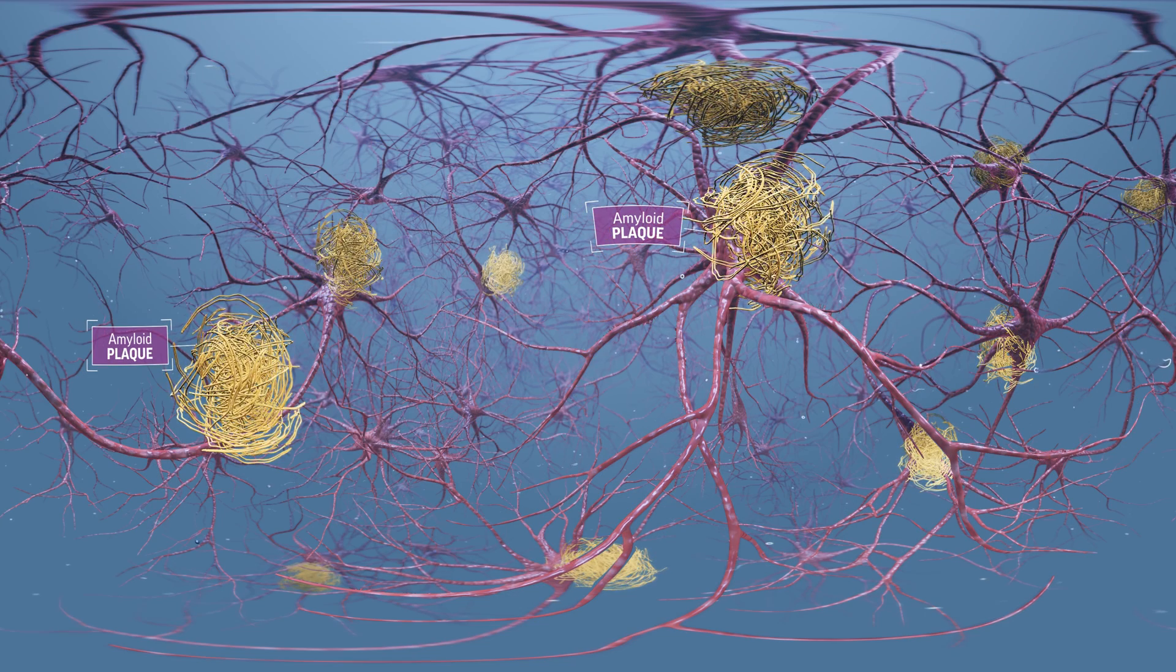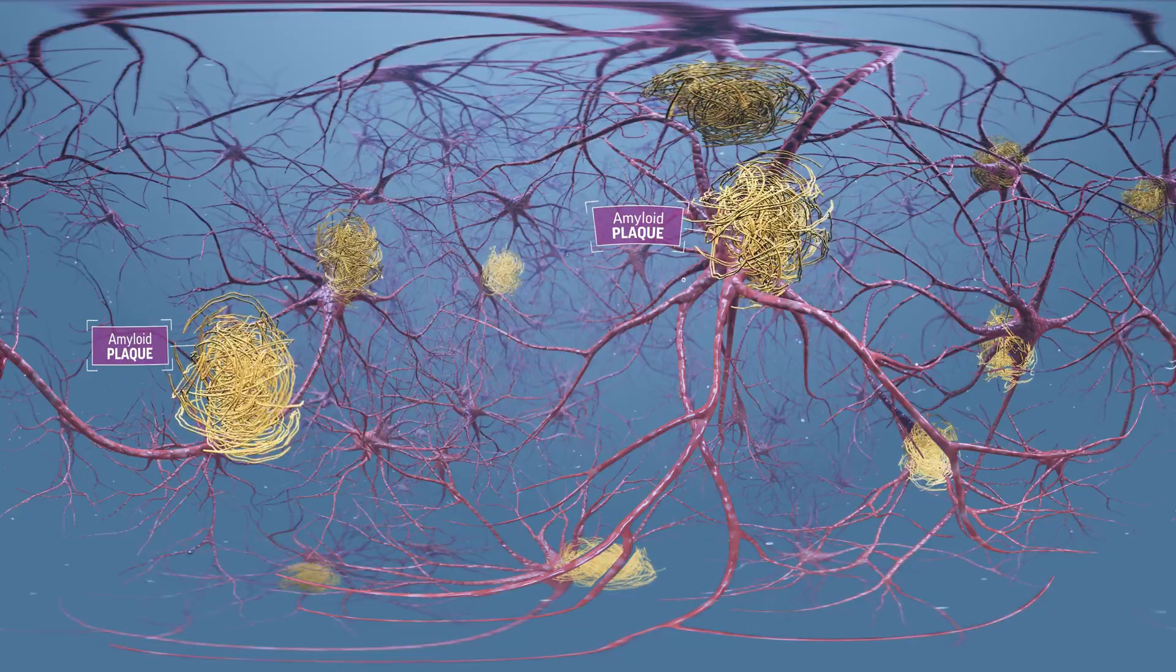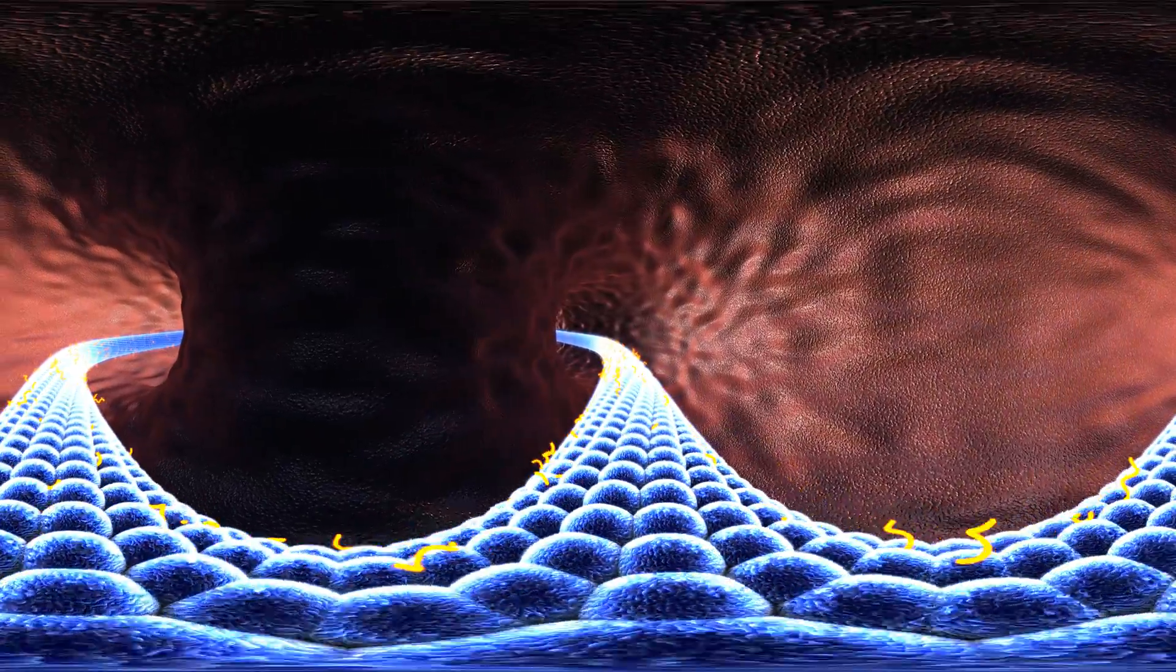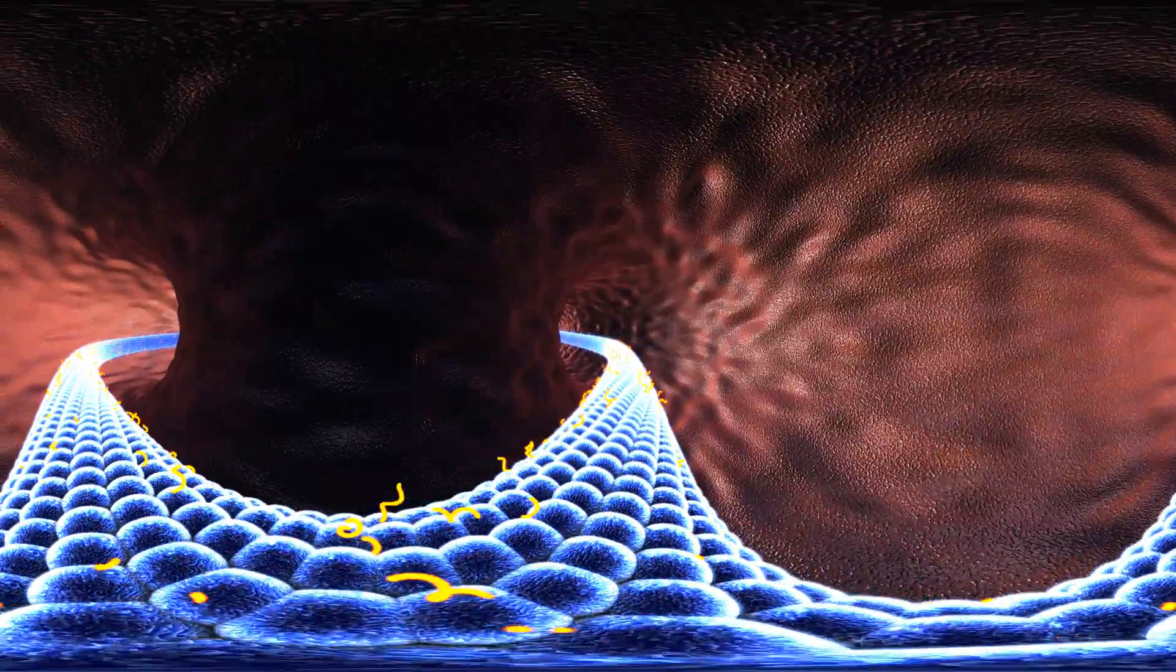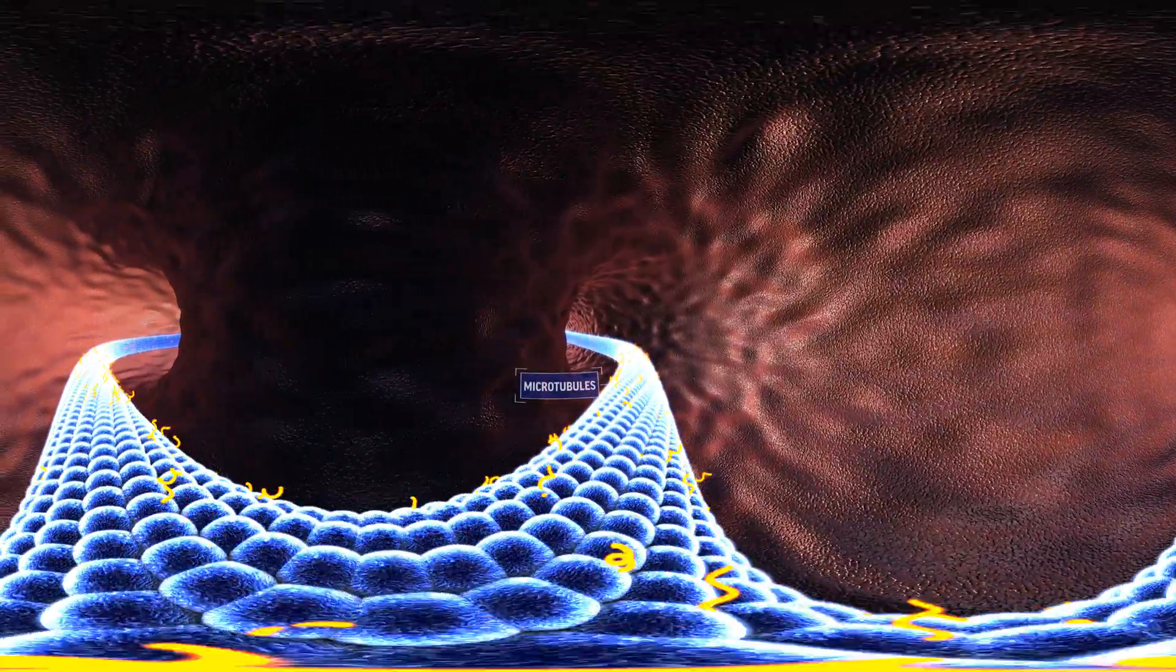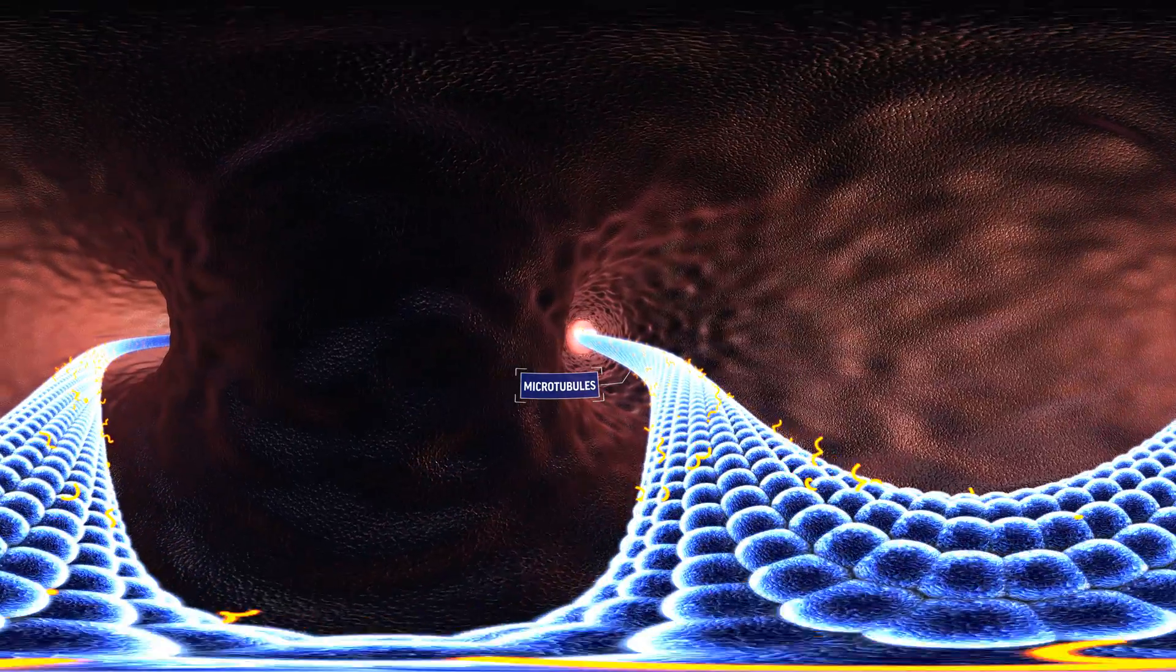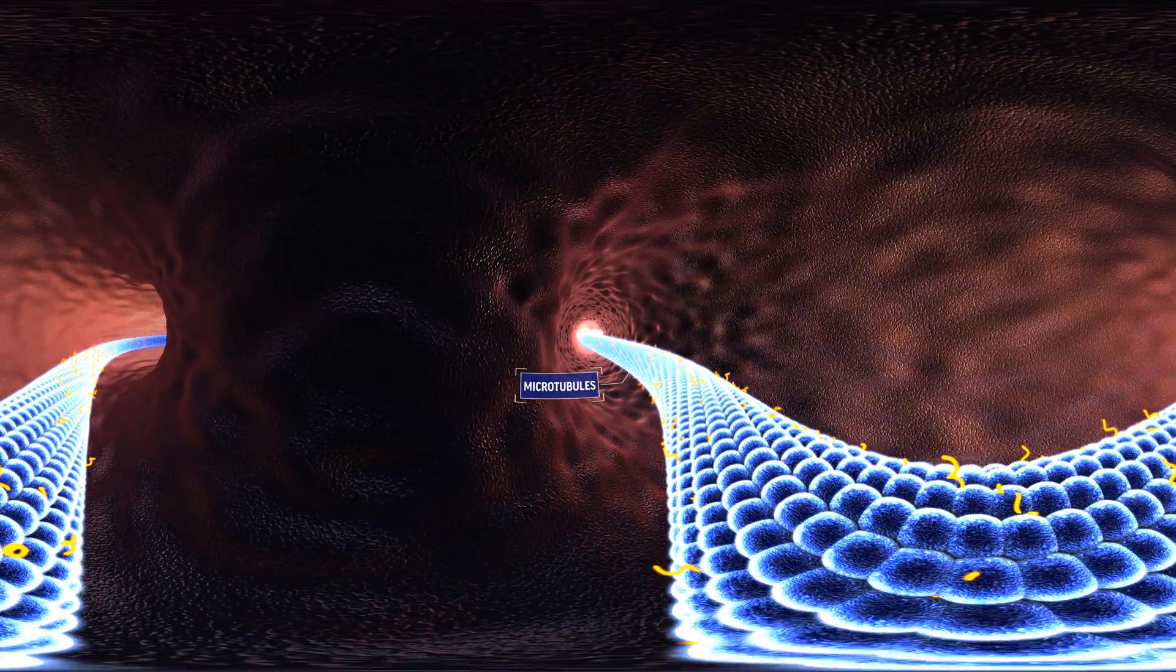Now let's move inside the neuron where those neurofibrillary tangles form. Neurons contain a system of microtubules that transports nutrients and other substances. A protein named tau helps hold that system together.